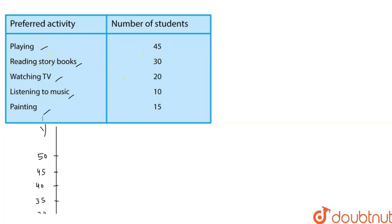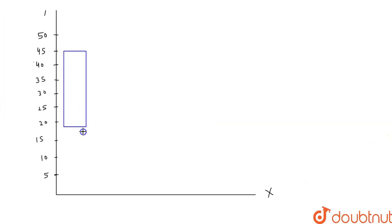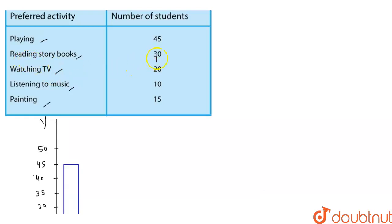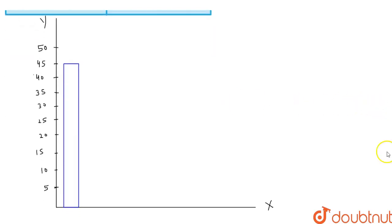First, let us draw the bar for playing. There are 45 students who want to play in their free time, so we draw the bar up to 45. After playing, there are 30 students who prefer to read storybooks in their free time, so we draw that bar up to 30.